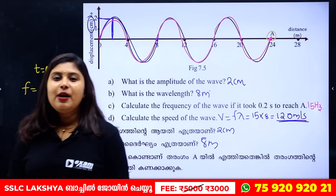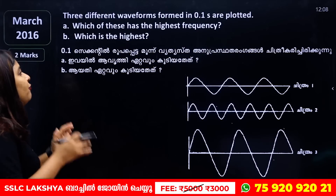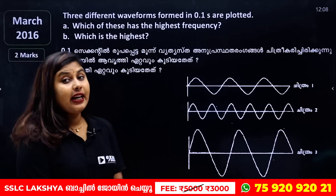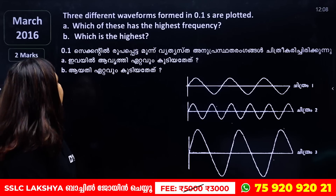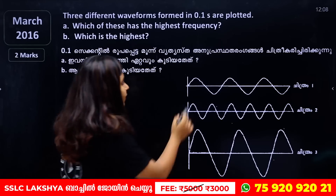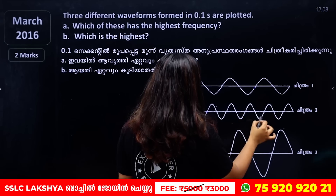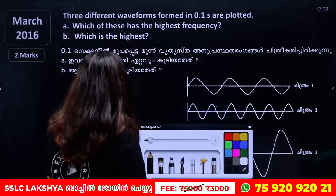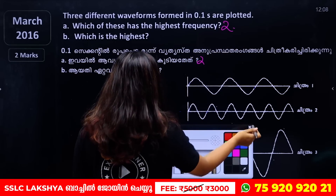Clear? The speed is 120 meters per second. Now, different waveforms are formed in 0.1 seconds. Which of these has the highest frequency? Looking at the 0.1-second time window, count the number of vibrations: 1, 2 — so there are 2 vibrations.